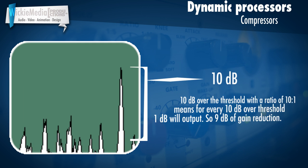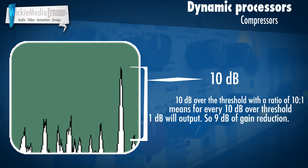If we have a ratio of 10 to 1, that means for every 10 dB over the threshold only 1 dB will come out. So if we have 10 dB over the threshold with a ratio of 10 to 1, that means only 1 dB will be outputted over the threshold.